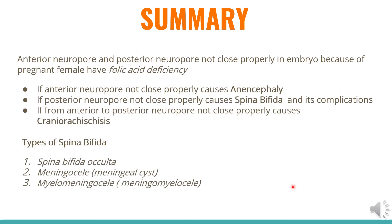We discussed today the neural tube defect: different conditions, types, causes, diagnostic tests, and treatment. In summary: the anterior neuropore and the posterior neuropore do not close properly in the embryo, often because the pregnant female has a folic acid deficiency. If the anterior neuropore does not close properly, it causes anencephaly. If the posterior neuropore does not close properly, it causes spina bifida and its complications. If from the anterior to the posterior neuropore both fail to close properly, it causes craniorachischisis.